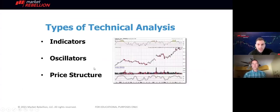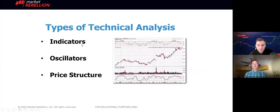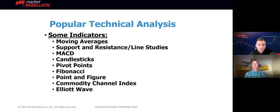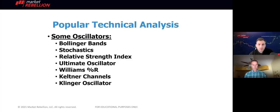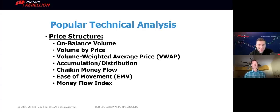There are other types of technical analysis. Before jumping into those, I want to cover the Trinity of technical analysis: it consists of price indicators, oscillators, and price structure. Examples of indicators include moving averages, support and resistance lines, and candlesticks. Popular oscillators include Bollinger Bands, the RSI, and Keltner channels — some things you may have heard mentioned on Trade the Chain before. And then price structure consists of on-balance volume, money flow, and the money flow index, as well as others.